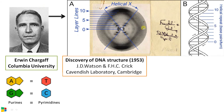The first major input for the discovery of DNA structure by Watson and Crick came from the X-ray crystallographic data of Rosalind Franklin of Maurice Wilkins' lab. From this X-ray crystallographic data, they got the idea of the DNA double helix.